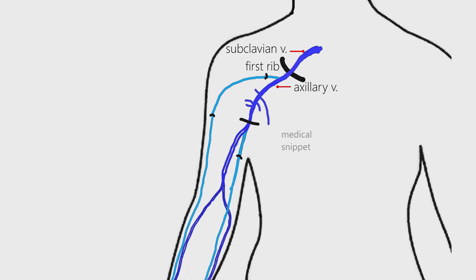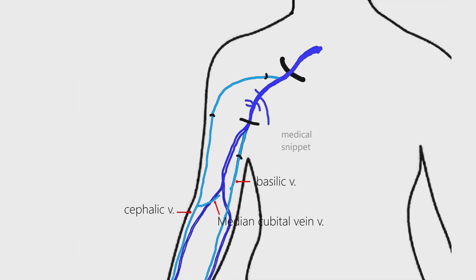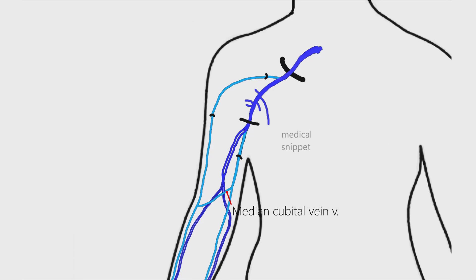The median cubital vein is a large communicating vein. It drains blood from the cephalic to the basilic vein. It starts from the cephalic vein below the elbow, runs obliquely and medially, then drains into the basilic vein. It communicates with the deep veins via a perforator vein. This perforator vein fixes the median cubital vein, making it ideal for intravenous injections.